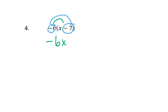Well, what is a negative times a negative? It's a positive. What is 6 times 7? It's 42.